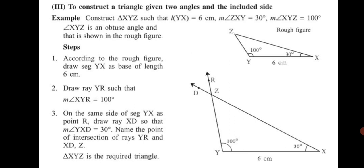Let's look at this example: construct triangle XYZ such that YX is equal to 6 centimeter. Since only one side is given, that side will form the base. Accordingly, the two other angles are shown in the figure — angle ZXY is 30 degree, and angle XYZ is 100 degree. Construct an obtuse angle for XYZ which is 100 degree, then complete a rough figure. Draw an estimated rough figure, not exactly to measurements using a protractor — just a rough figure.